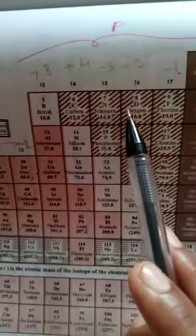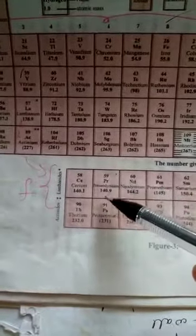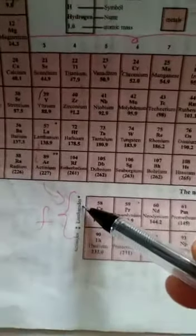And then 13, 14, 15, 16, 17, 18 are called as P-block elements. And then these two lanthanides and actinides are called as F-block elements.